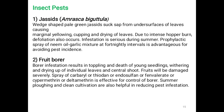Jassid (Amrasca biguttula) is a wedge-shaped pale green pest that sucks sap from the underside of leaves, causing marginal yellowing, curling and drying of leaves. Intense infestation causes hopper burn and defoliation, serious during summer. Prophylactic spray of neem oil–garlic mixture at fortnightly intervals is advantageous.